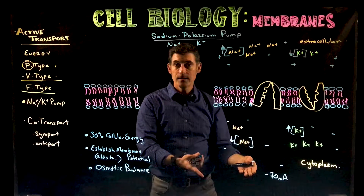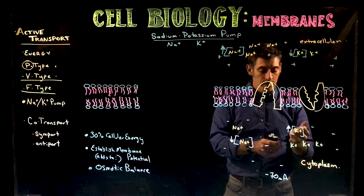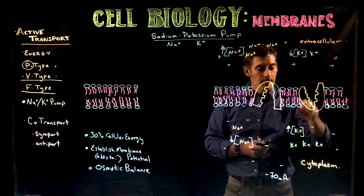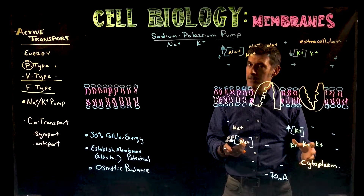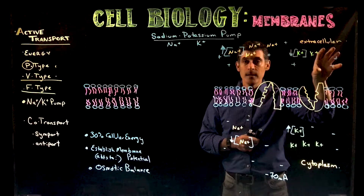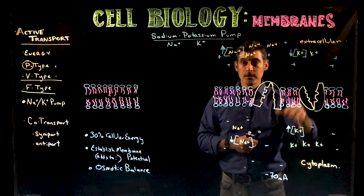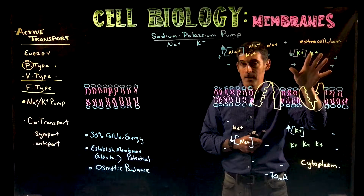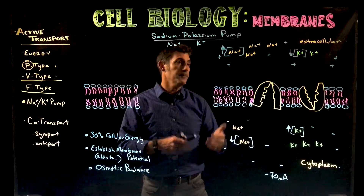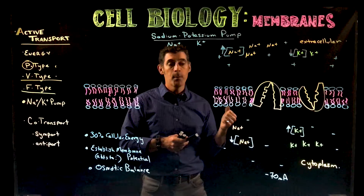Considering charge and membrane potential: sodium ions are positive, and the inside of the cell is negative, so sodium is attracted inward. Potassium, while in high concentration inside, is in a negatively charged environment it's attracted to. Outside is positively charged, so potassium is electrically repelled from going out, even though concentration is lower there. Membrane potential affects ion movement in this way.